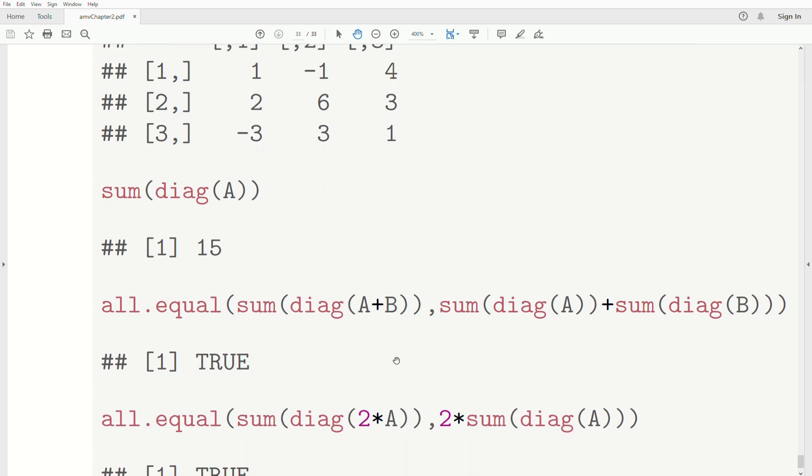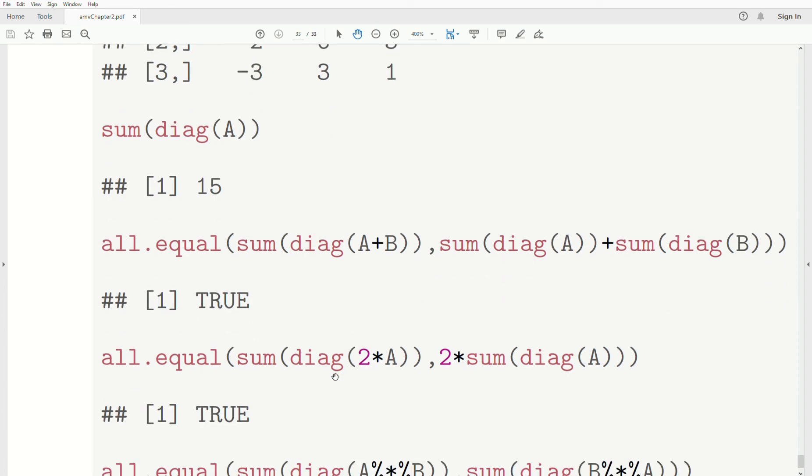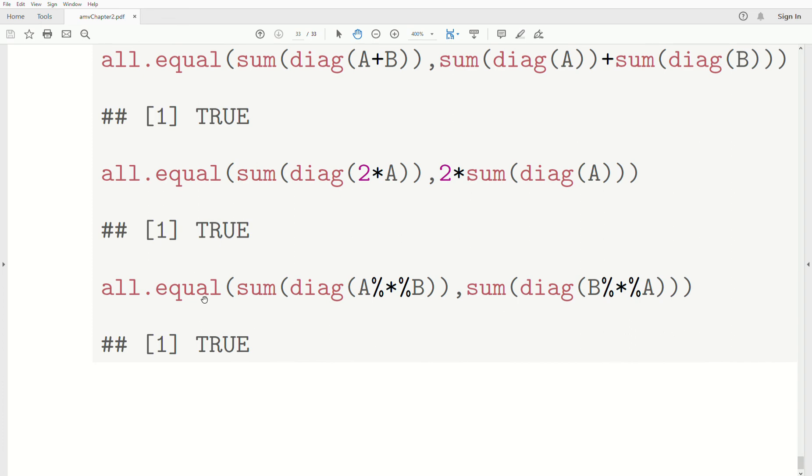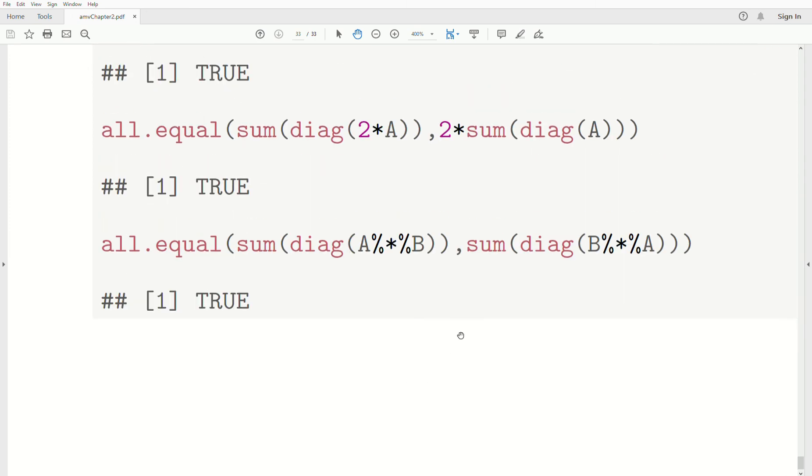Now we can check the properties. So the trace of A+B is the same as the trace of A plus the trace of B. That's true. The trace of 2*A is the same as 2 times the trace of A. That's true. And the trace of A*B is the same as the trace of B*A. That's true.